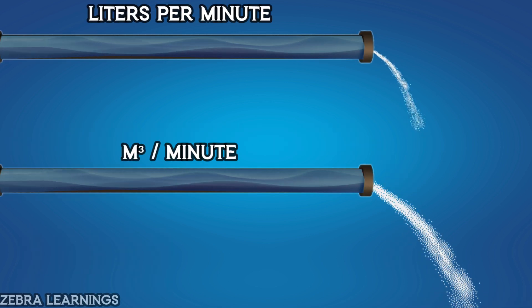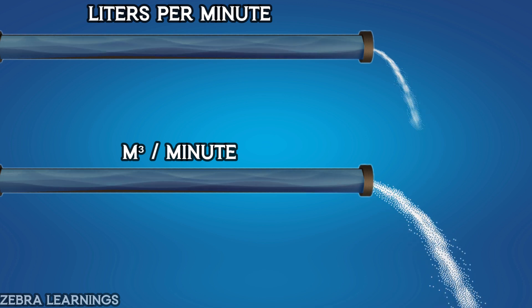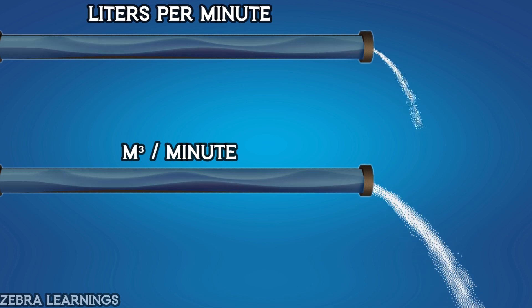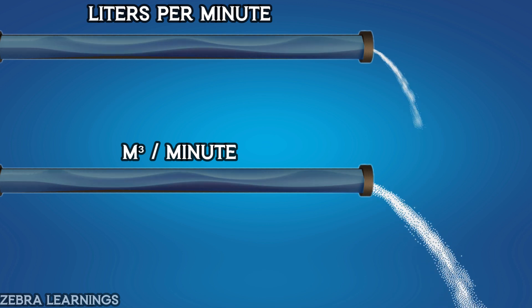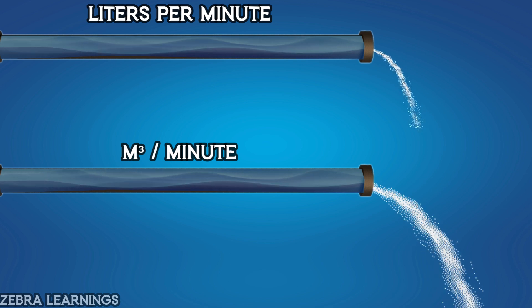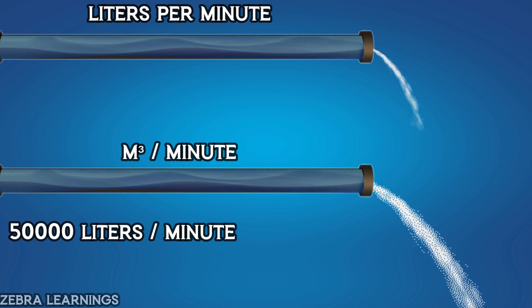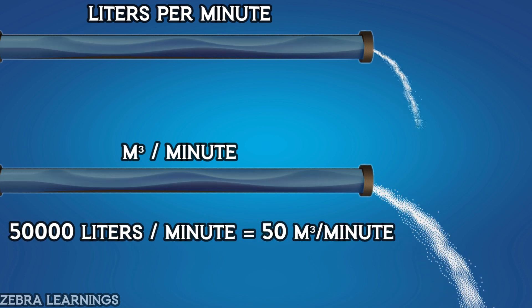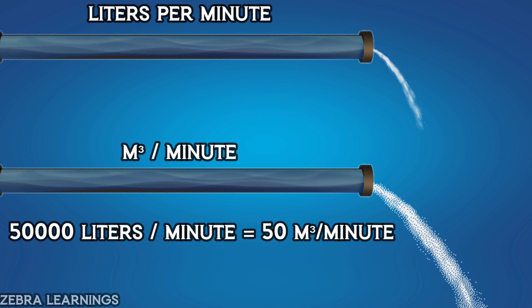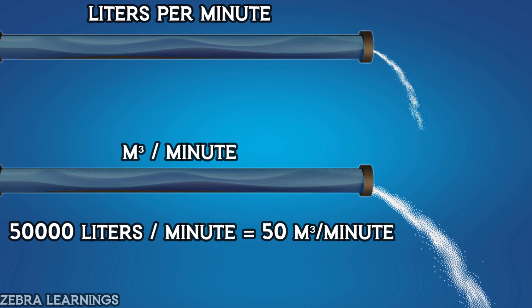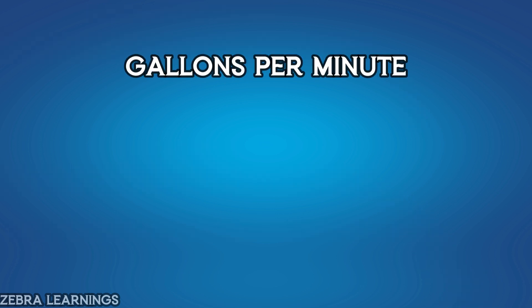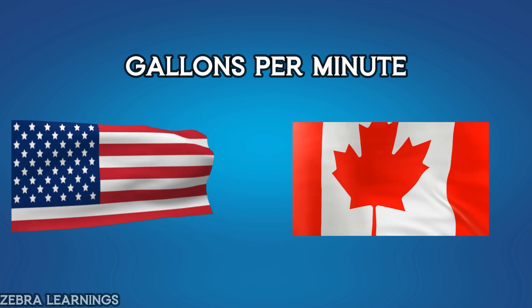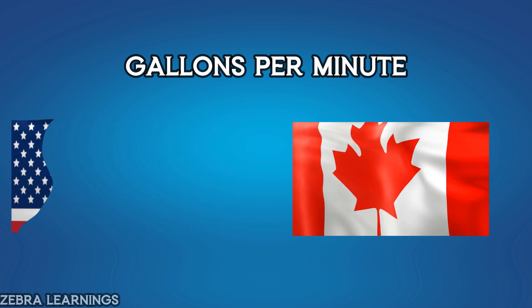The unit liters per minute is used in places where the flow rate is small. The unit cubic meters per minute is used where the flow rate is high. For example, if the water flow rate is 50,000 liters per minute, it can be expressed as 50 cubic meters per minute for short. The unit gallons per minute is commonly used in the USA and Canada to measure flow rate. This is the explanation of the flow rate units.